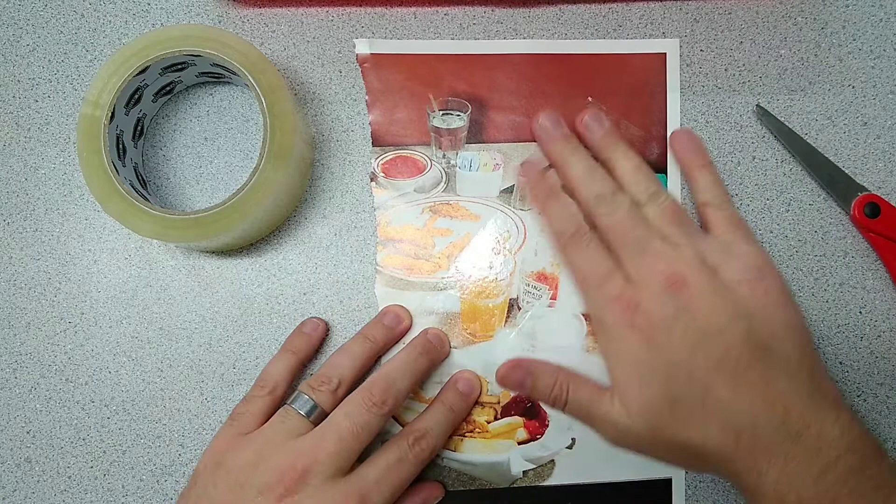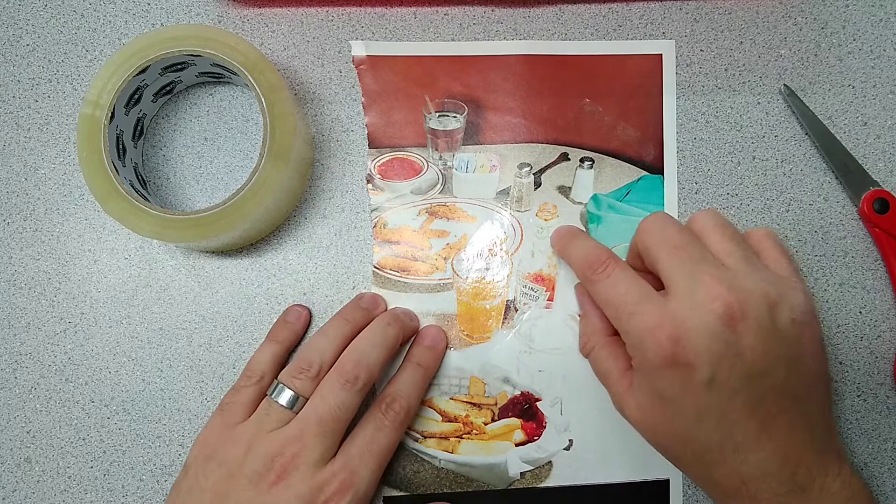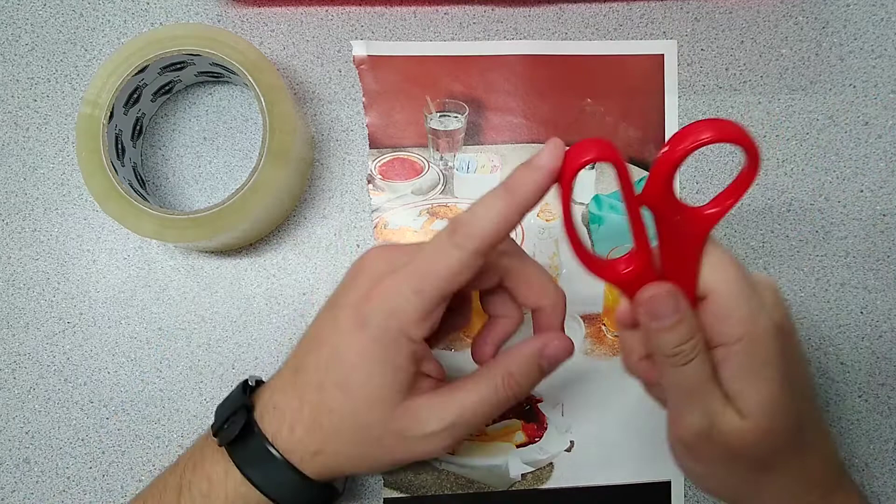Now step number two, we need to burnish this tape. We want to get it stuck down so good on here that there aren't even any tiny bubbles keeping it from sticking to the surface. If you skip this step, then your transfer is not going to work right.